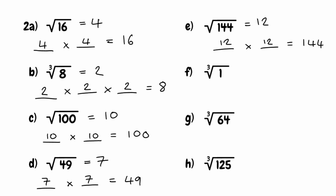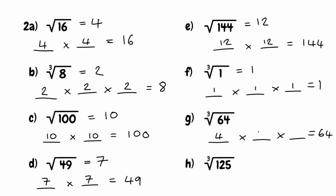The index has changed now for part f — we're looking for the cube root of 1. What number when multiplied by itself three times gives us 1? That's just 1, because 1 times 1 is 1, and multiplied by 1 again is still 1. So the cube root of 1 is just 1. For part g, we're looking for the cube root of 64. The answer is 4, because 4 multiplied by 4 is 16, and multiplying that by 4 again gives us 64. So the cube root of 64 is 4.